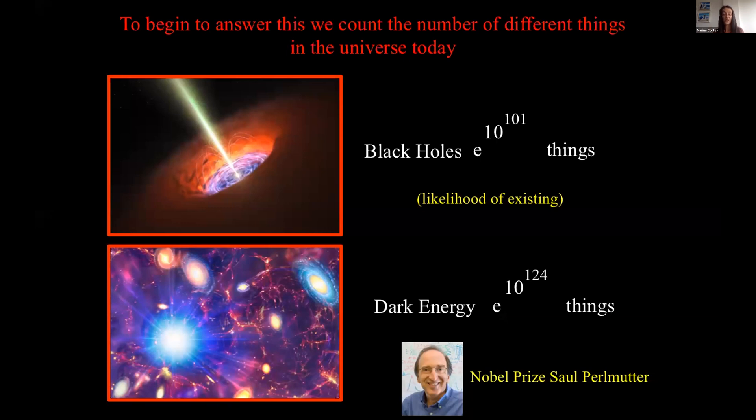Up until 20 years ago, we thought black holes were the most diverse, contain the most diversity, because they can swallow one galaxy or two galaxies at a time. And so their amount of complexity is e to the 10 to the 101, which is a very big number.